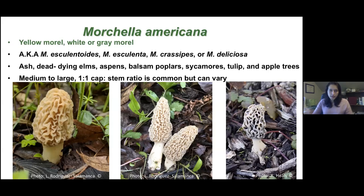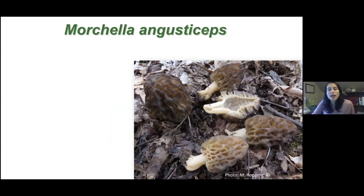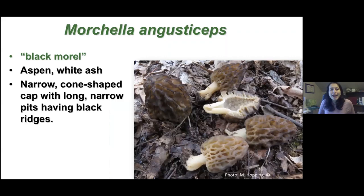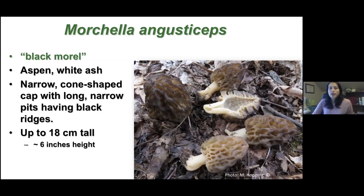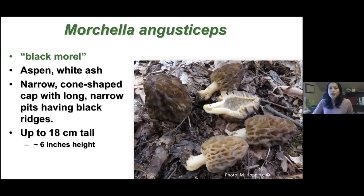Morchella angustisipis is known as the black morel. It's normally associated with forests that have aspen and white ash trees. The cap is narrow with a cone shape and long, narrow pits, and the pits have very distinctive black ridges — hence the nickname black morel. This mushroom can be up to six inches in height, and the stalk is tan to grayish with a flaky surface.